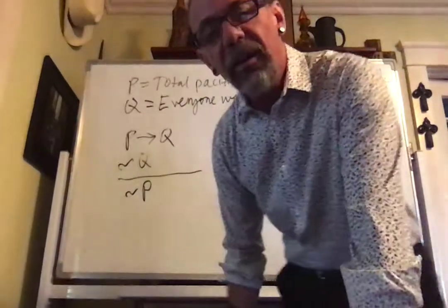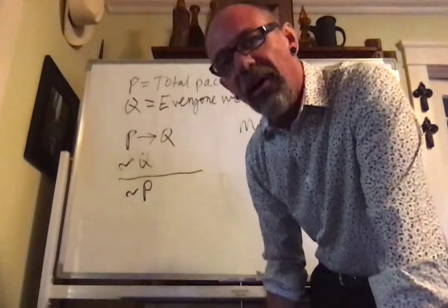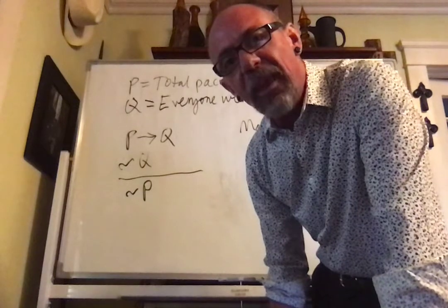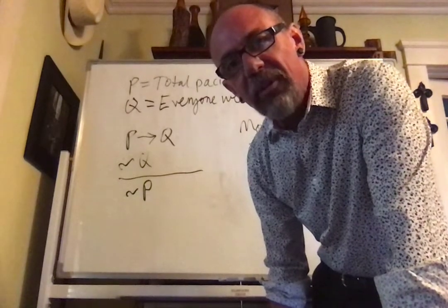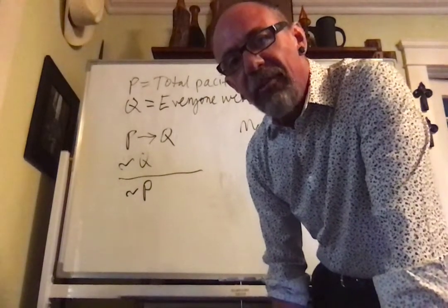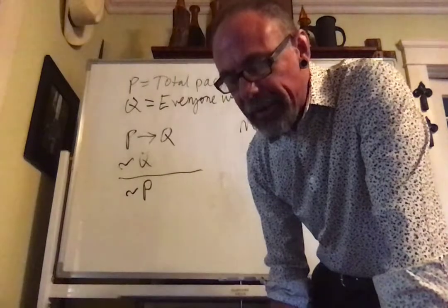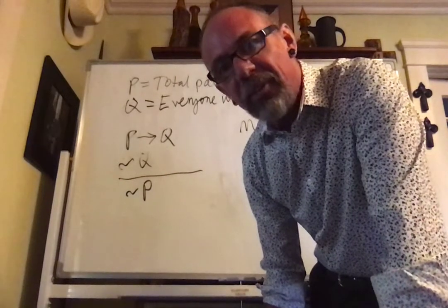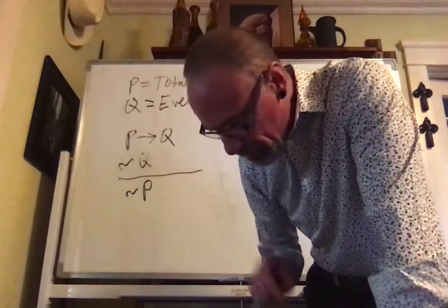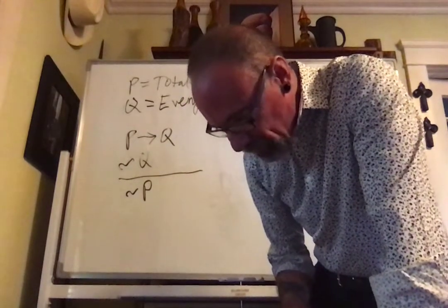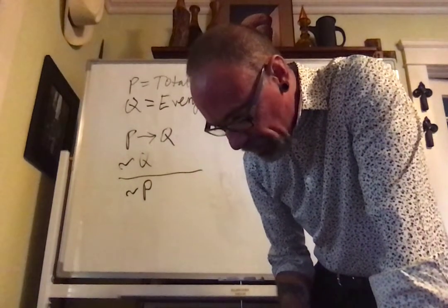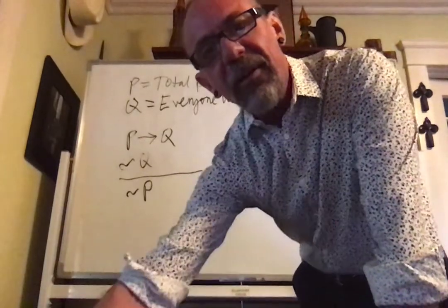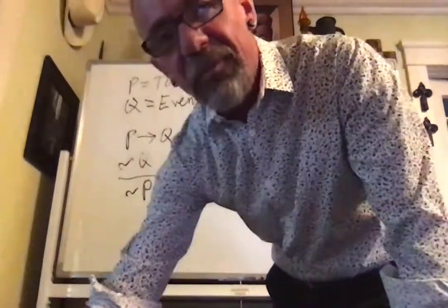By the way, I'm not going to go through number 10 because it's kind of long, but in number 10 you'll see an instance of the valid form modus tollens from a story written by a Hollywood gossip columnist named James Bacon. I think it's kind of an amusing story — I think you'll enjoy it. All right, that's it for this video, and I will see you again in another video soon. Take care. Bye-bye.